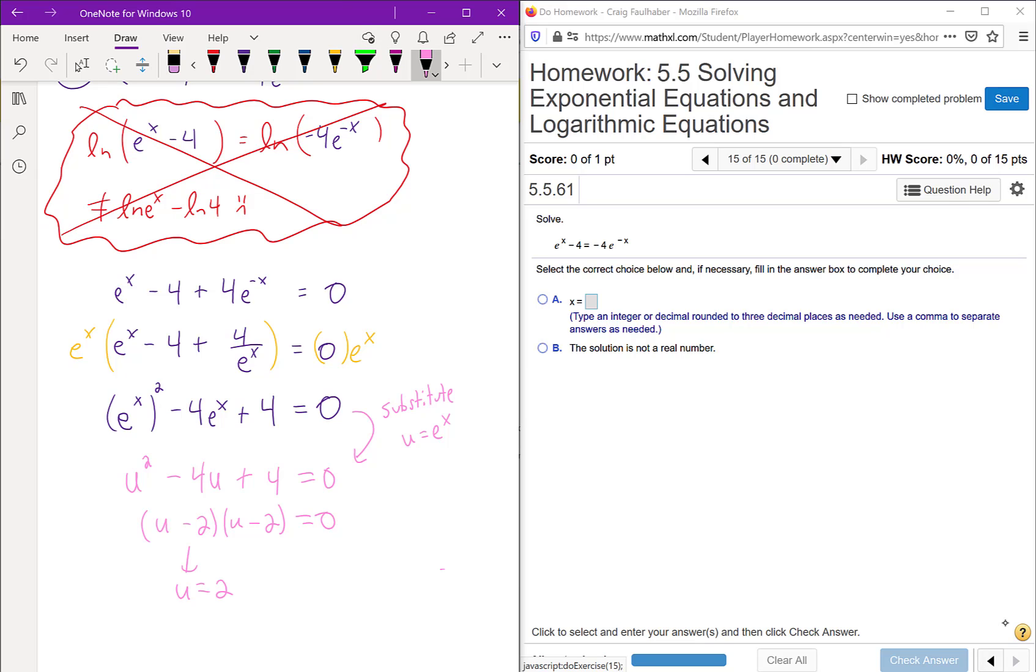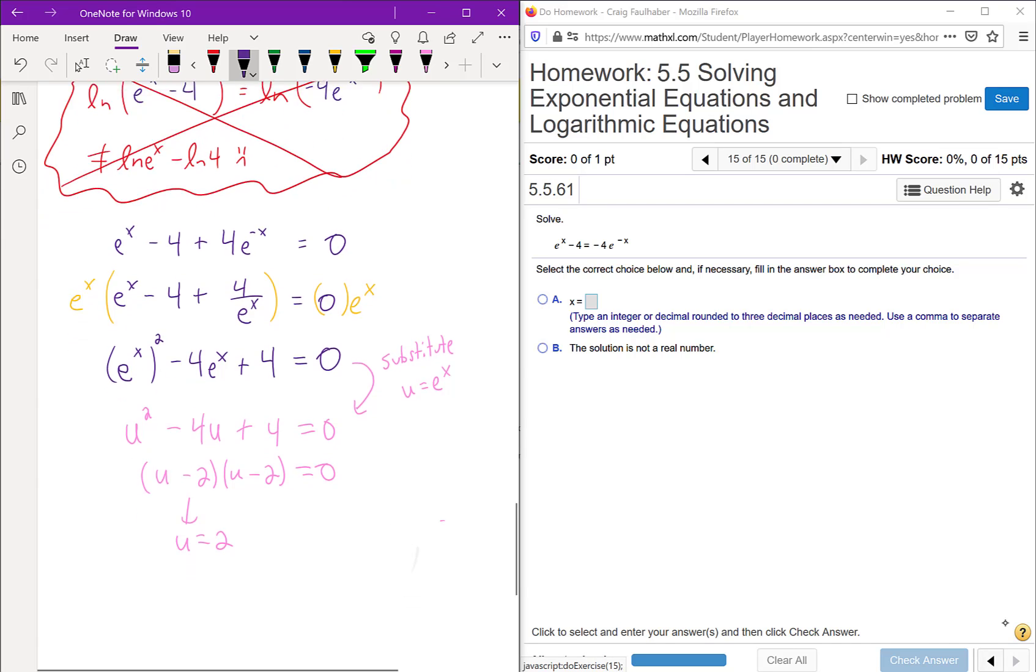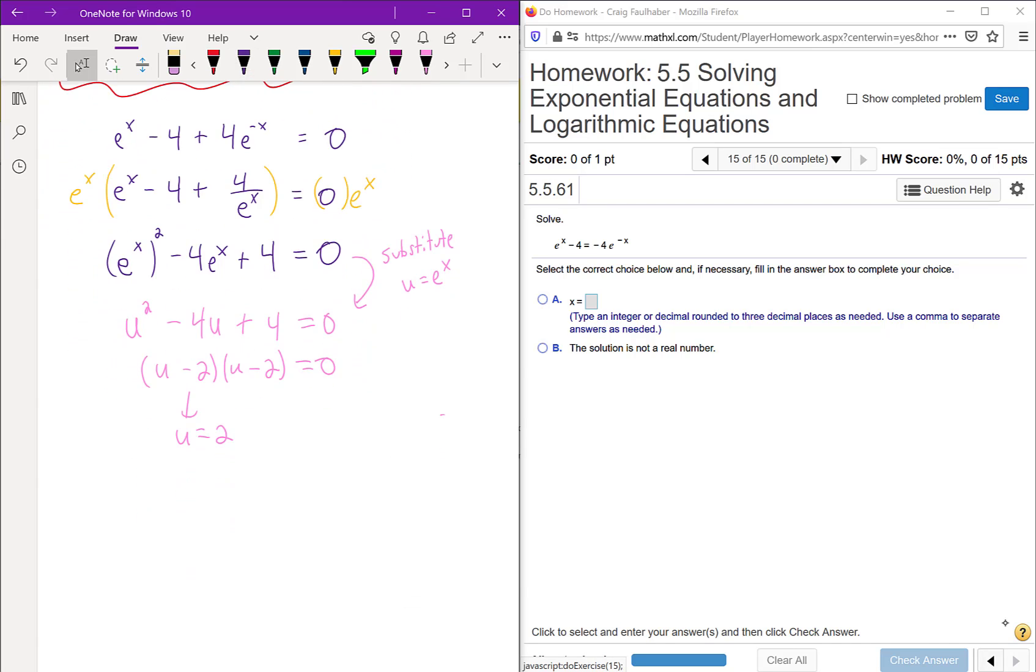Of course, we just solved this equation for u, but we don't care about that variable, we want x. Given u equals two, how can we actually solve for x? Well, what we can do is we can substitute back in what u was down here. U was just e to the x. So we have e to the x equals two. And that is the last equation we need to solve to get our final answer.